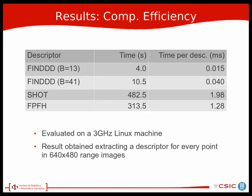The first results concern computational efficiency. B stands for the number of bins of our descriptor. As you can see, FIND is up to two orders of magnitude faster than SHOT and the fast point feature histogram, which are two state-of-the-art descriptors.